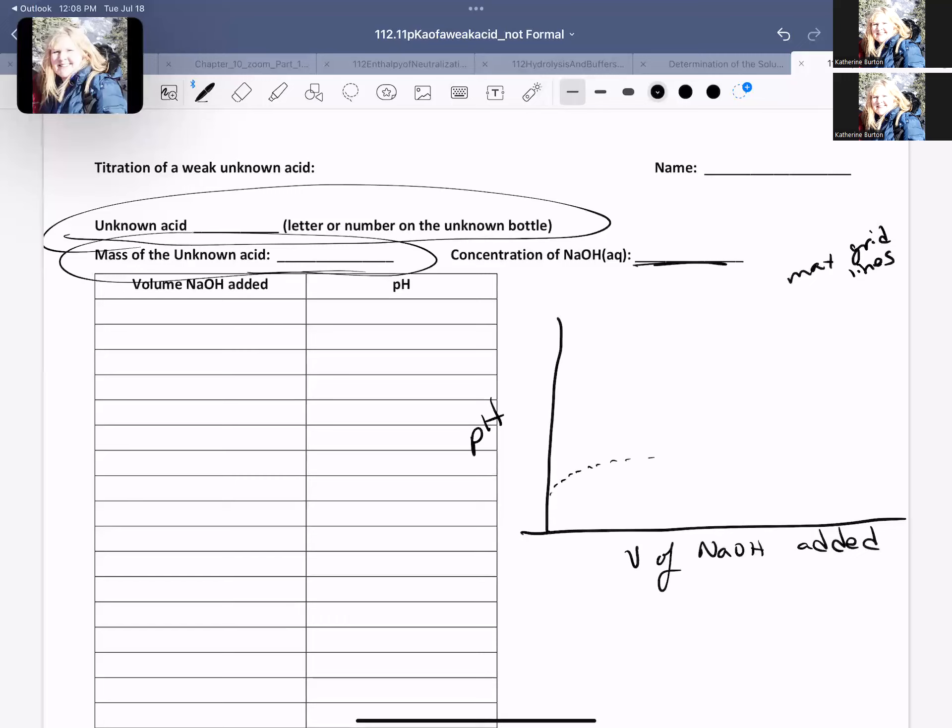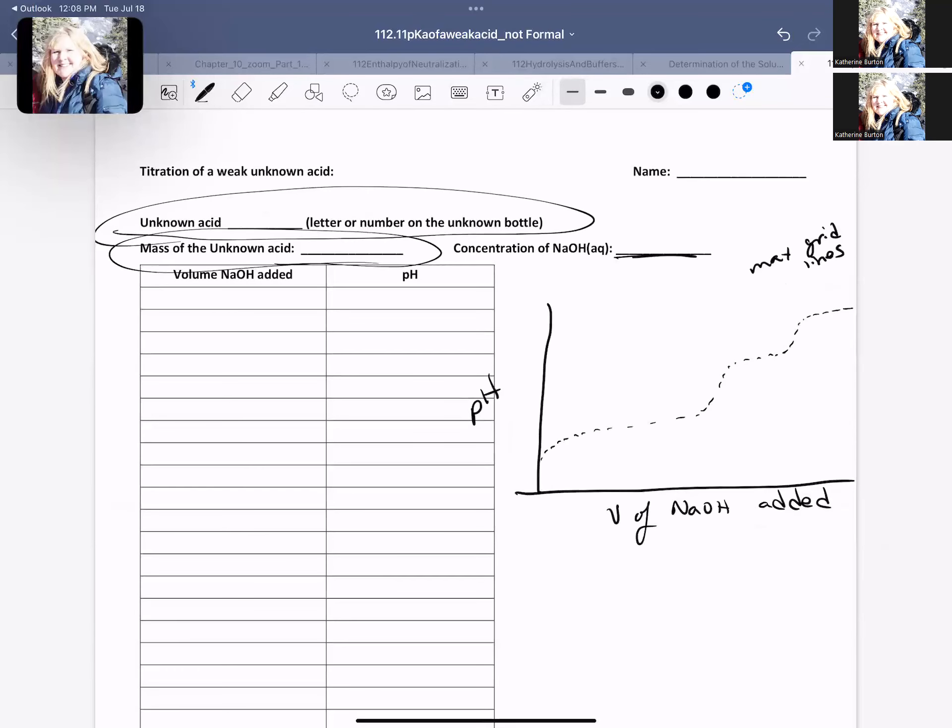And it's going to do one of two things. It's either going to come up a little bit, level out, bump up, and then level out. Or if you have a diprotic acid, it's going to bump up again and level out again. If you have a diprotic and you have the two little humps on this one, you're going to have two pKa's. So let's make sure we remember what we're doing here.